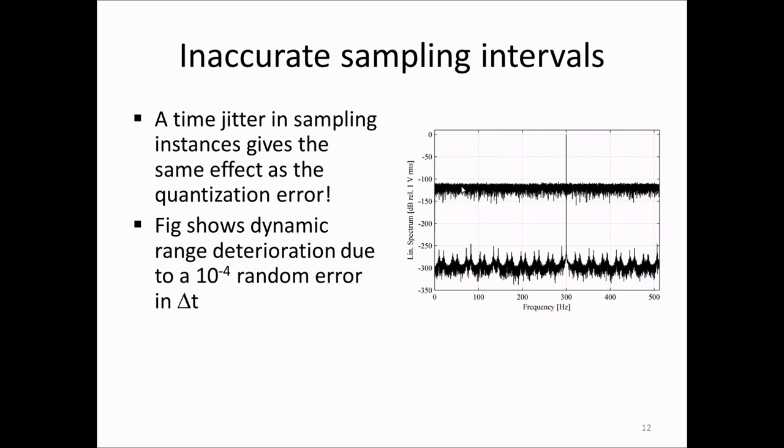As you can see, both spectra show the correct peak value at 300 Hz, but the spectrum using the signal with the jitter has a much reduced dynamic range. A consequence of this is that if you want to design your own measurement system, you need to make sure that you incorporate so-called sample and hold circuits that ensure accurate and stable sampling instances.